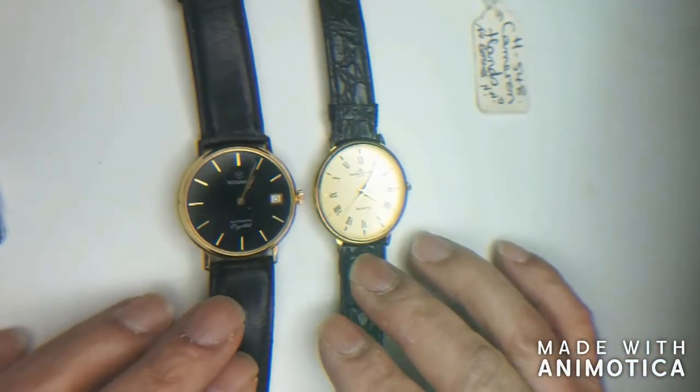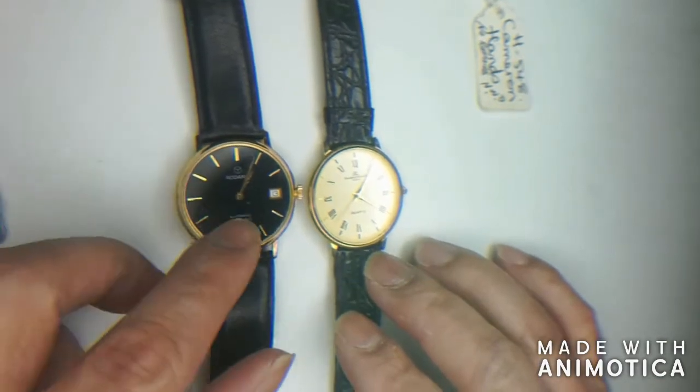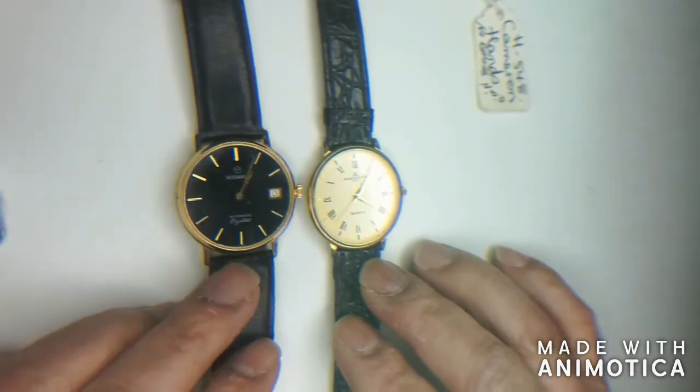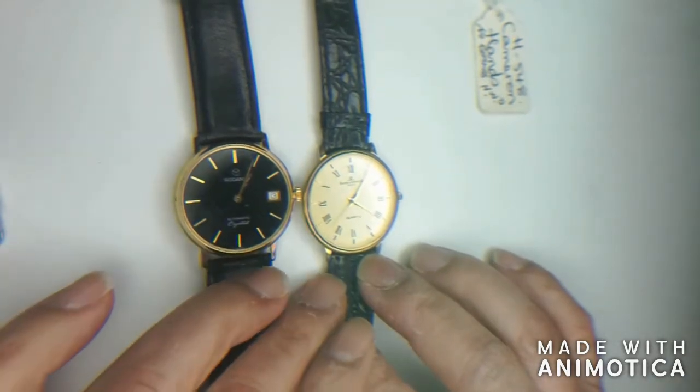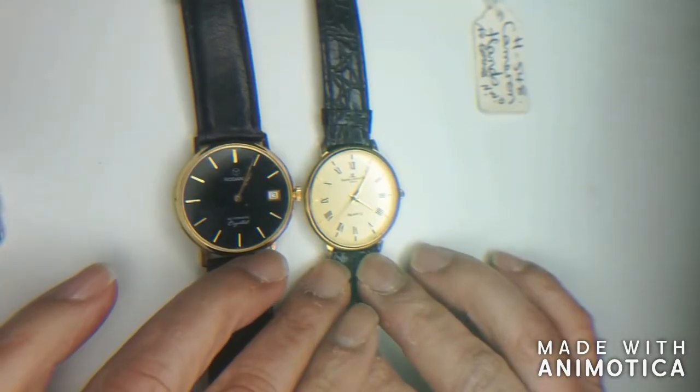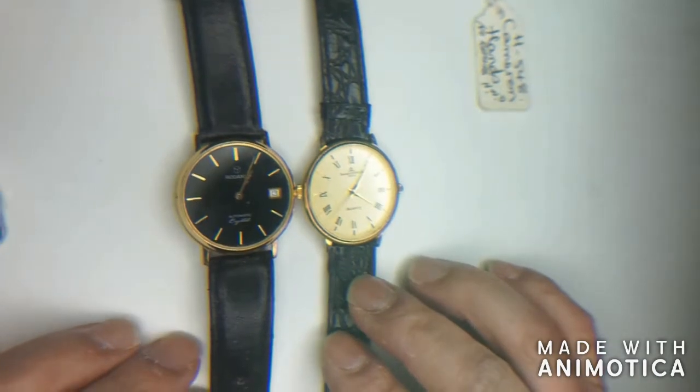Okay, so here there's two: the black one is the Rodinia automatic with crystals, and the other one is Birmingham and Mercer Geneva Quartz.